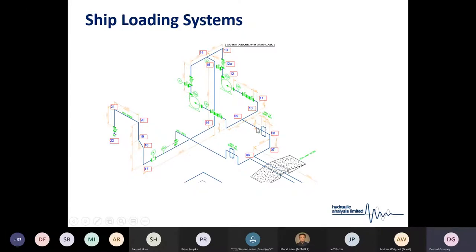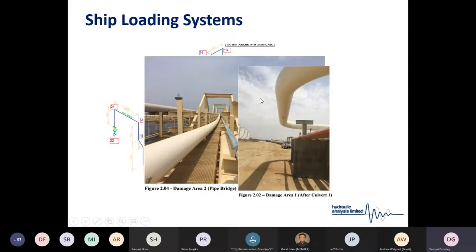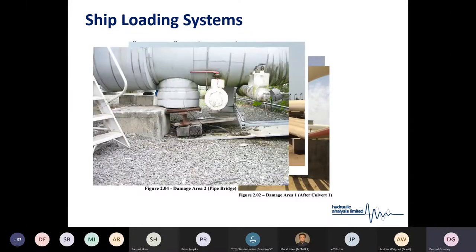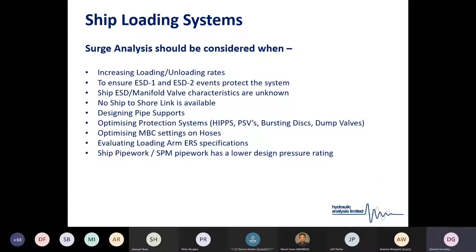One of the outputs of a surge analysis is to provide the detailed out-of-balance forces at every change in direction within the piping — you need to make sure the piping is supported to withstand the transient impact. We have many examples of systems where pipe movement was seen as a result of a transient event: loading lines moving off their supports during a transient event, and pipe movement in LNG systems.